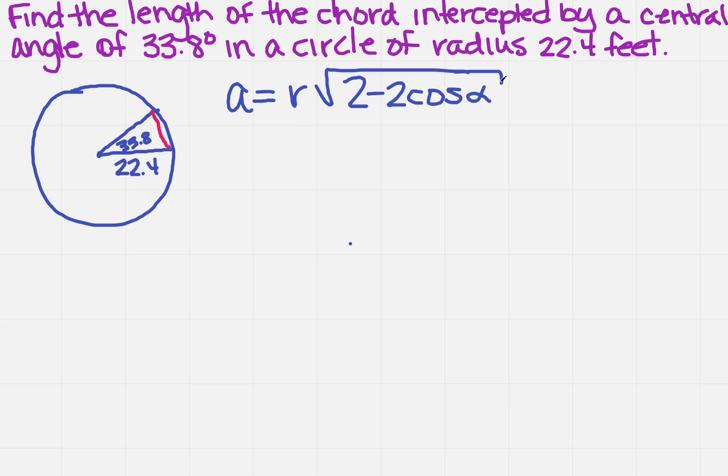Well, I know the radius and I know my angle, so check this out, it's just a plug and chug. So I'm going to get 22.4 times the square root of 2 minus 2 times the cosine of my angle, which is 33.8.